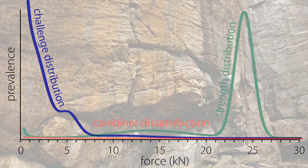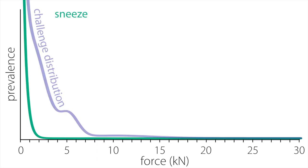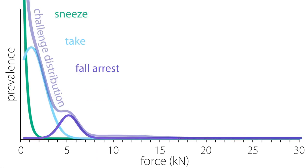So first, I'll provide a general overview of all the factors that contribute to the shapes of these curves. I'll start with the challenges distribution, which I'll divide according to four separate categories: sneeze, take, fall arrest, and freaky bleep.